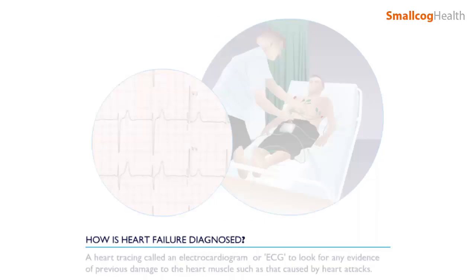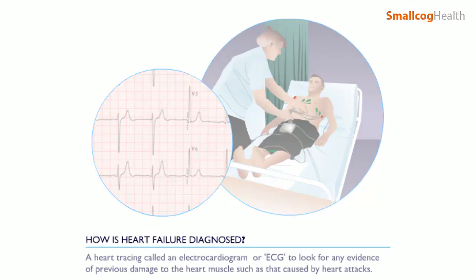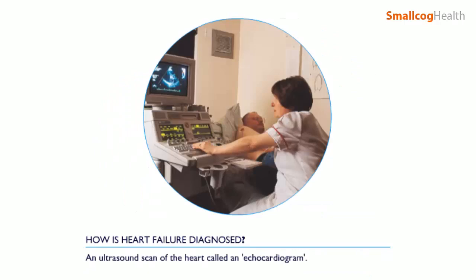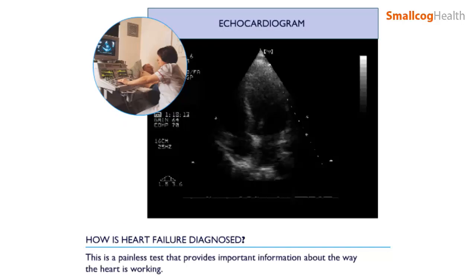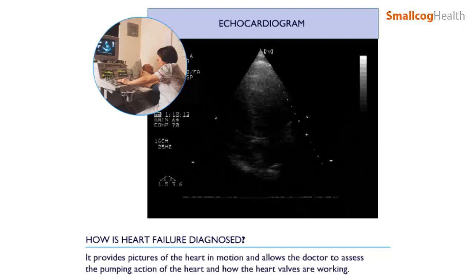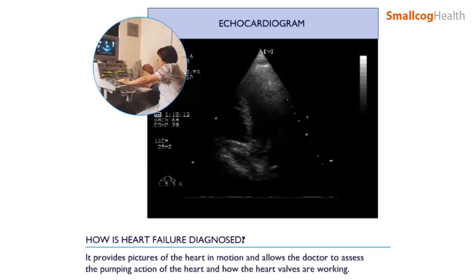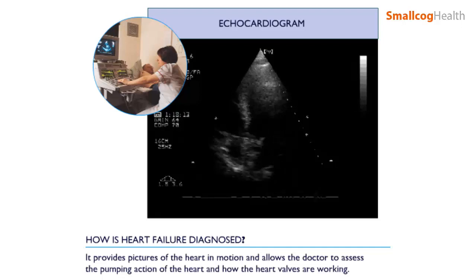A heart tracing called an electrocardiogram or ECG is used to look for any evidence of previous damage to the heart muscle, such as that caused by heart attacks. An ultrasound scan of the heart called an echocardiogram is a painless test that provides important information about the way the heart is working. It provides pictures of the heart in motion and allows the doctor to assess the pumping action of the heart and how the heart valves are working.